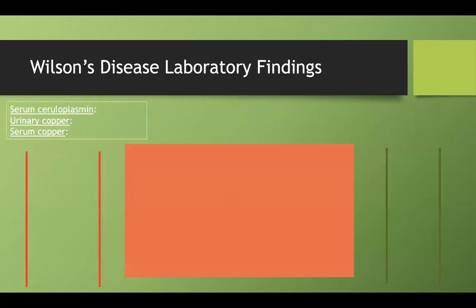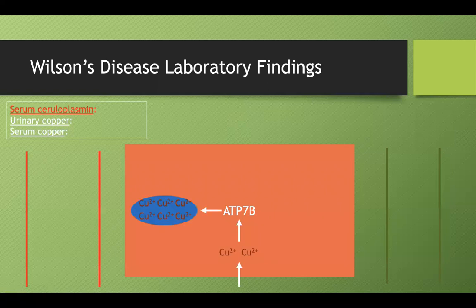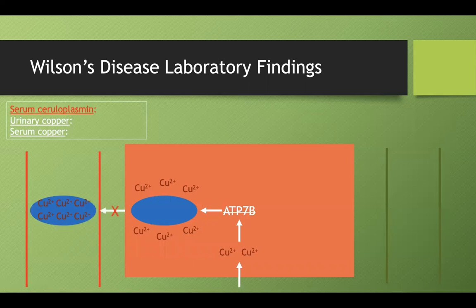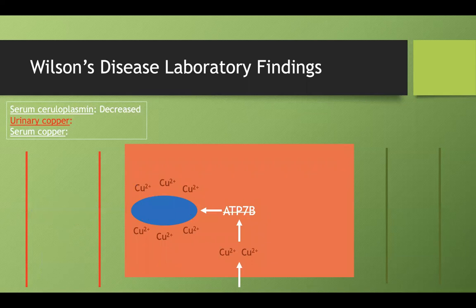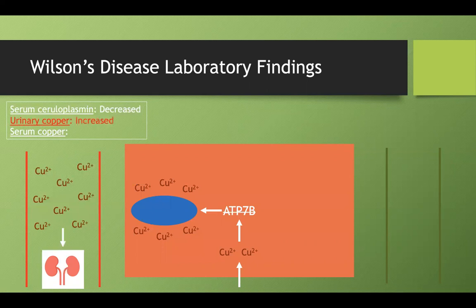Serum ceruloplasmin is low in Wilson's disease because if the ATP7B protein isn't working, copper can't be packaged into ceruloplasmin for release into the blood. Urinary copper is elevated because free copper that leaks out after hepatocyte damage can easily pass through the kidneys and be excreted, unlike copper correctly bound to ceruloplasmin.